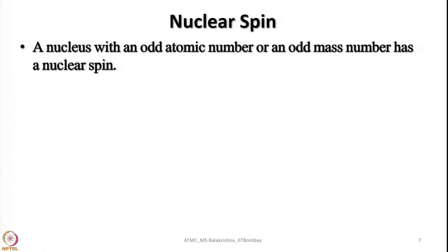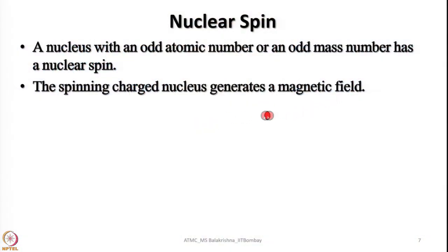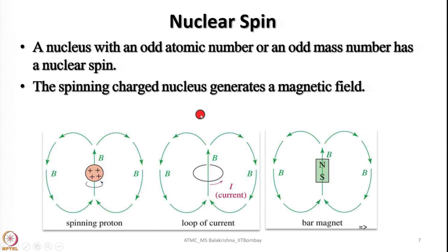A nucleus with an odd atomic number or an odd mass number has a nuclear spin, and the spinning charged nucleus generates a magnetic field. We can consider the nucleus as a tiny bar magnet: when placed in a magnetic field, it can be aligned with the field or oppose it. Spinning protons in the absence of a field have a haphazard arrangement; once placed in a magnetic field, some align with the field and some align opposite to it.